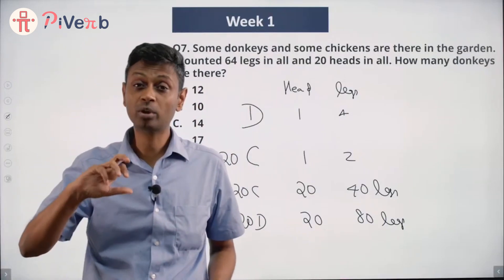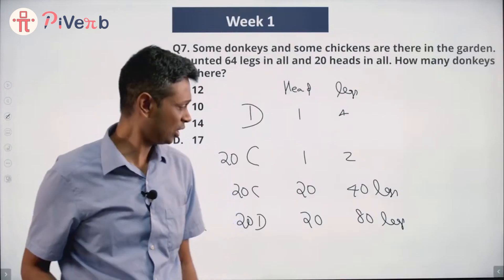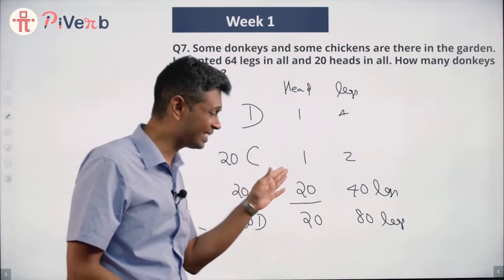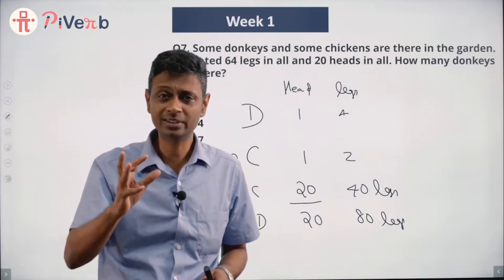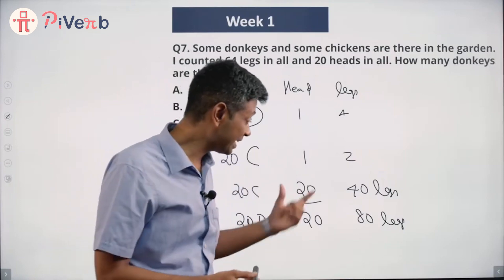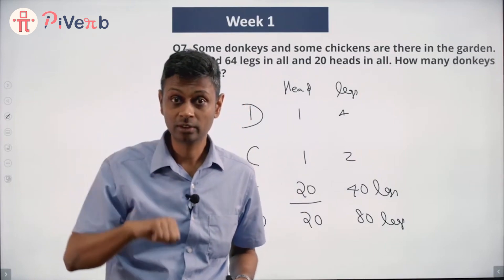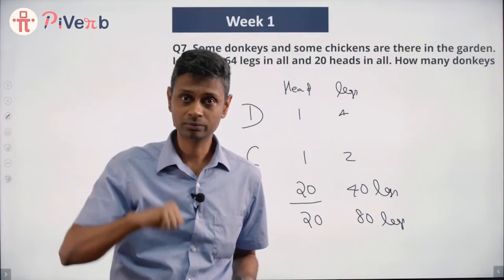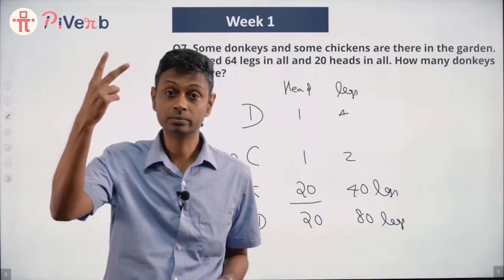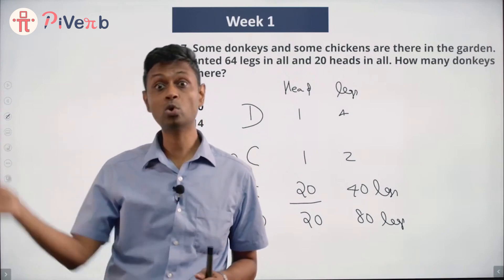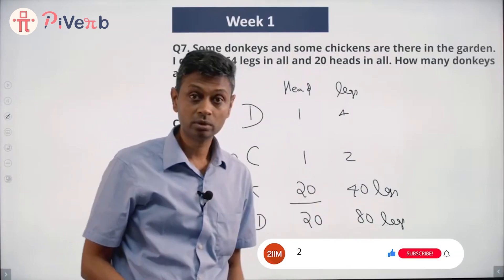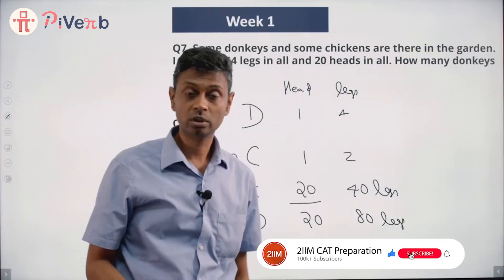We're in between because there are some donkeys and some chickens. Now think about this: if I take one chicken and instead make it a donkey, what happens? A chicken had only two legs; a donkey has four. So if I bring in one donkey, the number of legs increases by two — two are going out, four are coming in. So from 40 I go to 42.